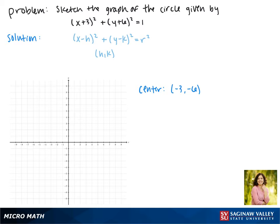Next we'll find the radius of our circle. Since r² equals 1, that means that r, or our radius, must be equal to 1.